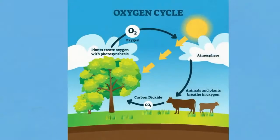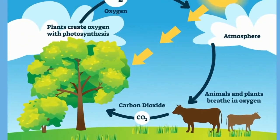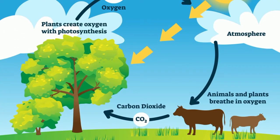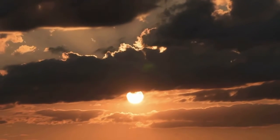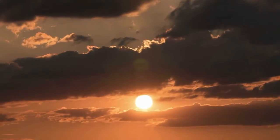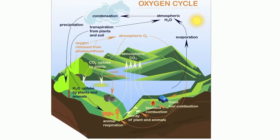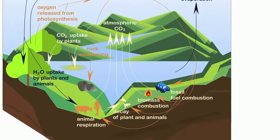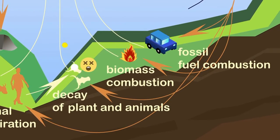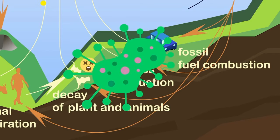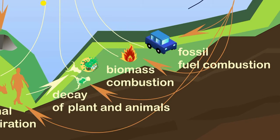Animals, some bacteria and protists, and other organisms that carry out cellular respiration use oxygen to create ATP and release CO₂. Sunlight produces some oxygen when it reacts with water vapor in the atmosphere. Decomposition, which is the breakdown of once-living organisms, uses oxygen and releases carbon dioxide. Microbes use oxygen to break down those organisms.